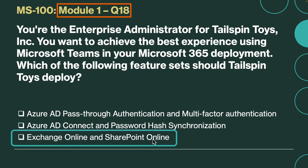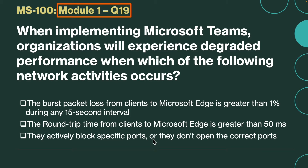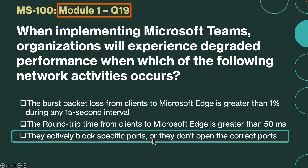Question number 19. When implementing Microsoft Teams, organizations will experience degraded performance when which of the following network activities occur? The correct answer is they actively block specific ports or they don't open the correct ports.